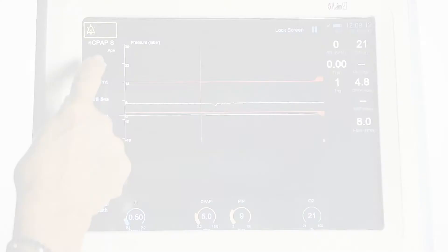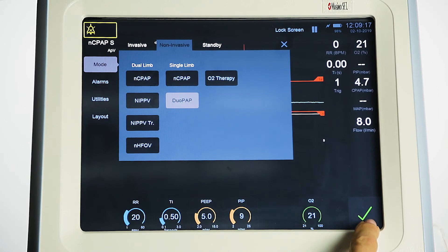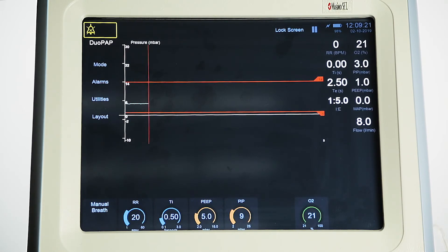DUO-PAP: Select mode, select DUO-PAP. Dual level, non-invasive positive pressure ventilation. In this mode, the ventilator generates a continuous positive airway pressure at a level set by the user.